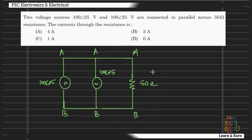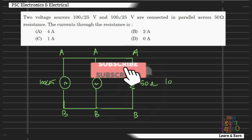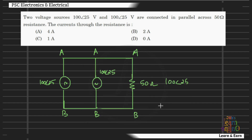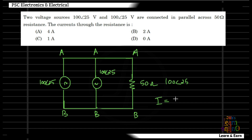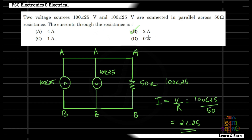Now let's look at the 50 ohm. The cross resistance is equal to 100 ohm. Using the voltage and resistance, we get 25 ohm equivalent. The current through the circuit is 2A. The answer is 2A.